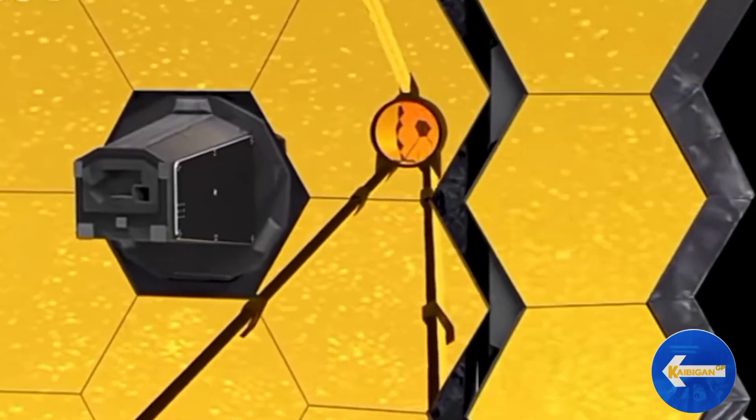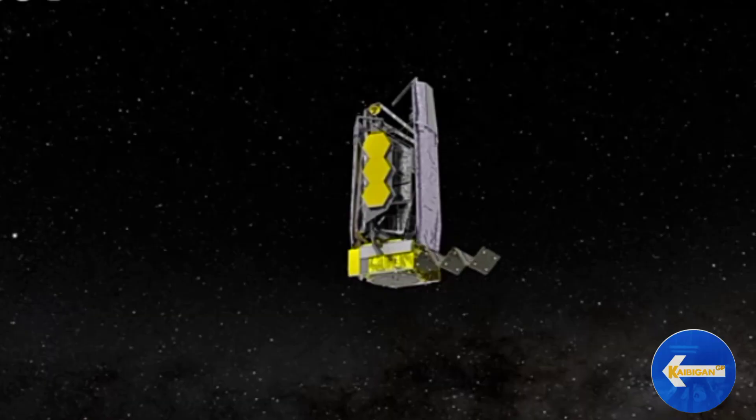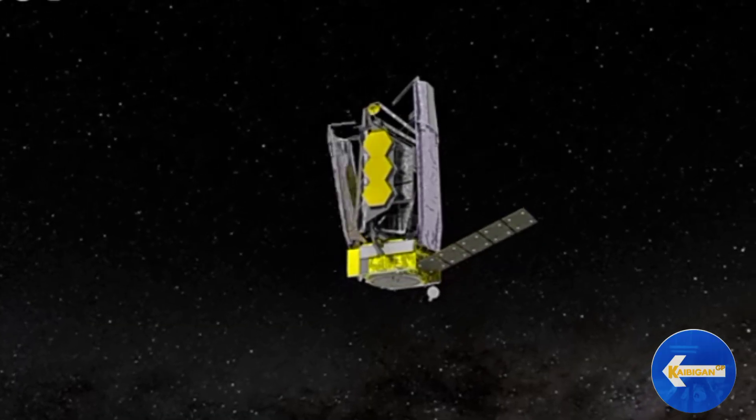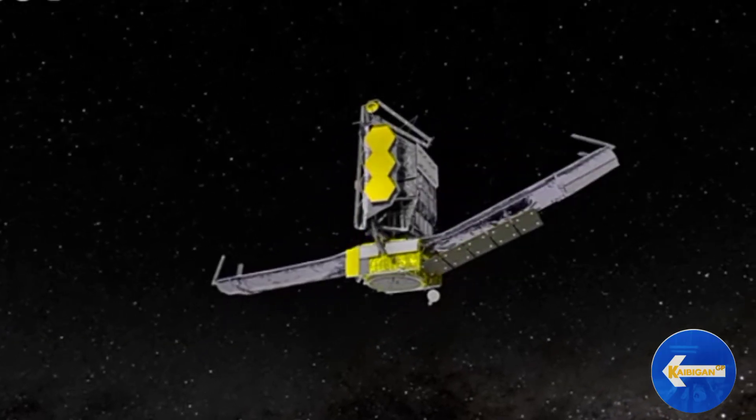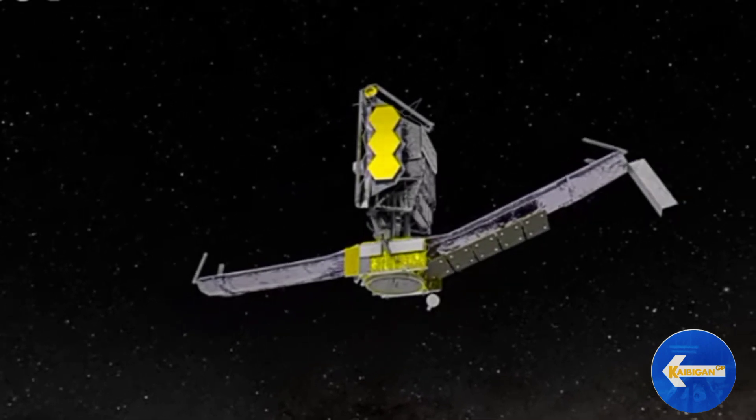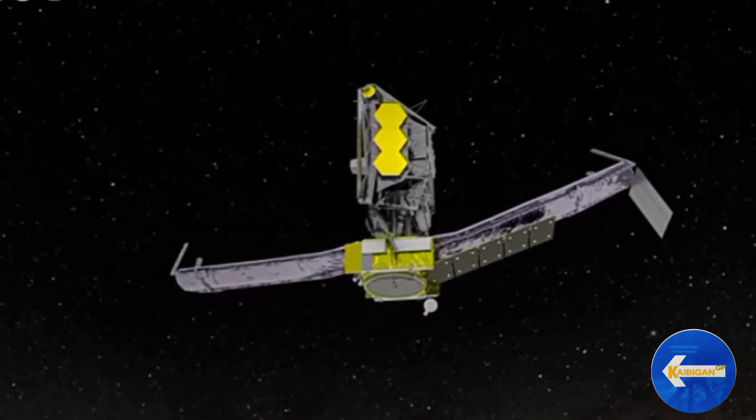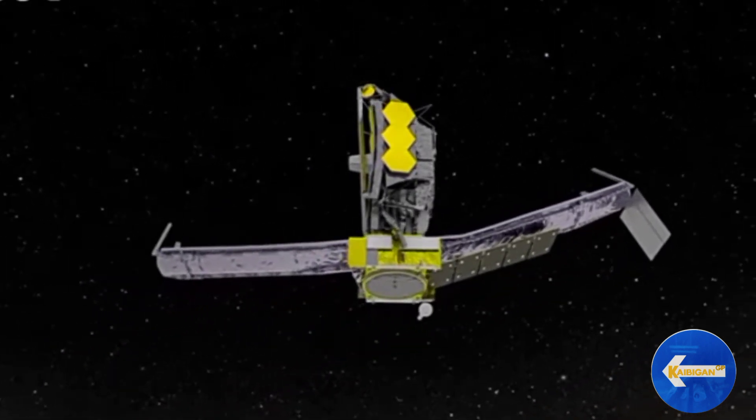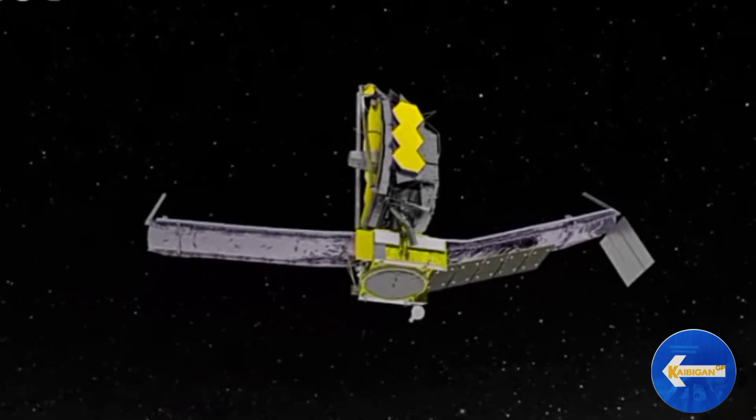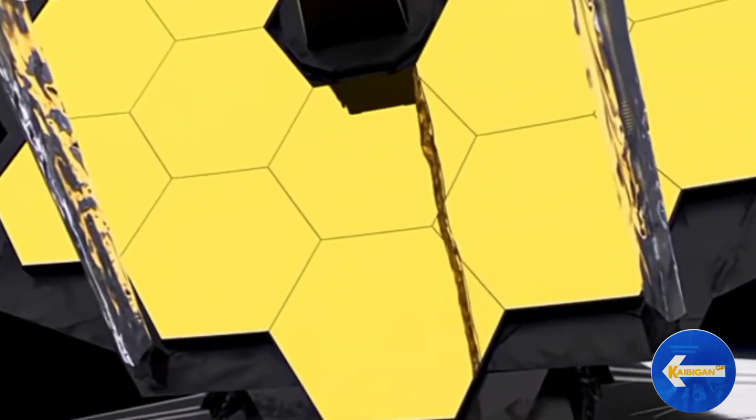Kaya paano eksaktong gagawin ng James Webb Telescope ang lahat ng ito? Kaya makakamit ng James Webb Space Telescope ang mga layunin ito sa pamagitan ng dalawang bagay. Una, sa pagiging malaki. Sa pangalawa, sa pagiging malamig.